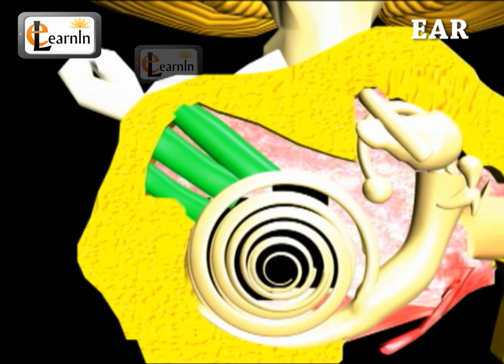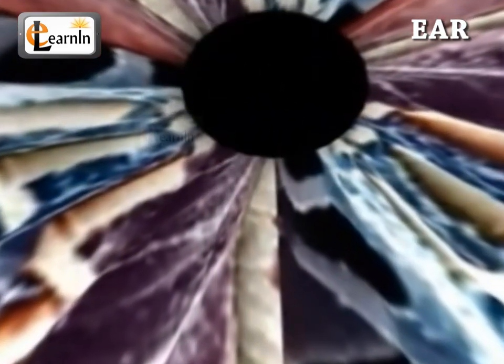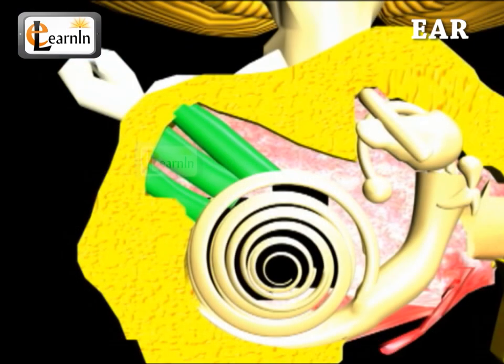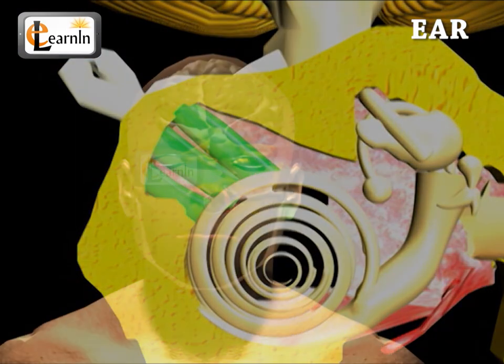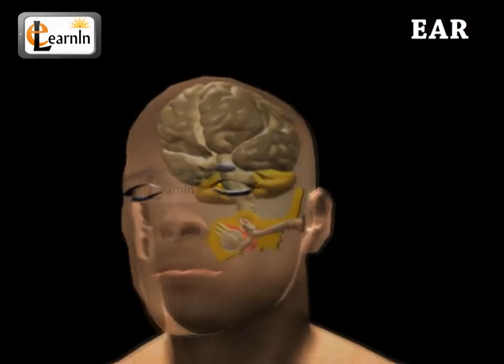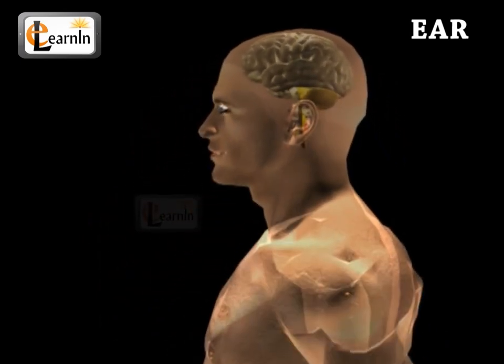The inner ear consists of the cochlea and a liquid. The cochlea is a shell-like structure. The Eustachian tube controls the amount of pressure in the ear. The auditory nerve carries the sound to the brain, and it is the brain that interprets the sound.